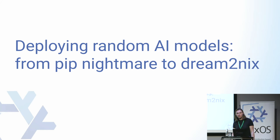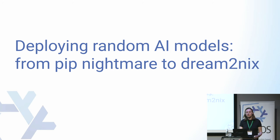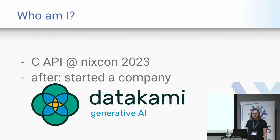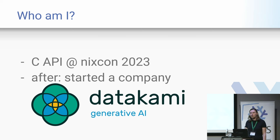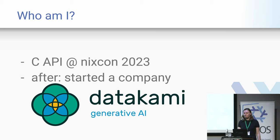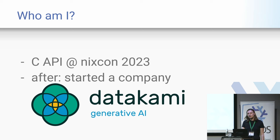Hello everyone. Today I would like to talk about my adventure in deploying generative AI models to random clouds. My name is Jorik. I started using Nix in 2014. This is my second talk here — last year I spoke about the C API. I've worked at Tweak and Lumiguide. Last year, after the C API talk, I started a company called Datakami, where we help startups that have generative AI as their core product to deploy and scale.